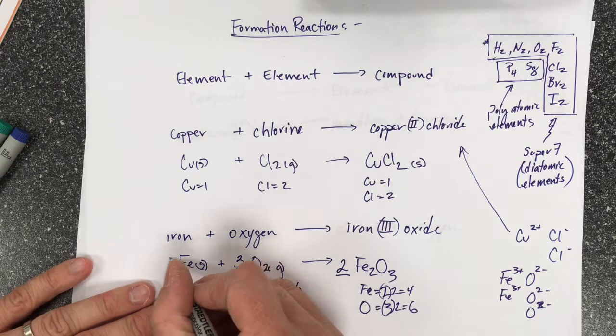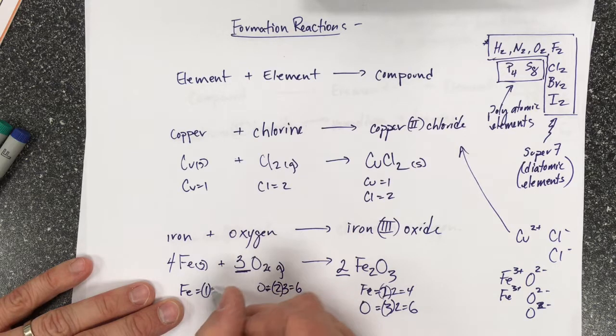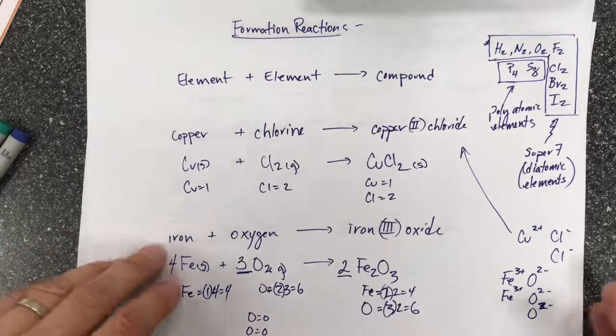But again, like I said, this is easy to balance because this is a 1. I can multiply it by any number to get the number I want. So I want 4, I multiply it by 4.